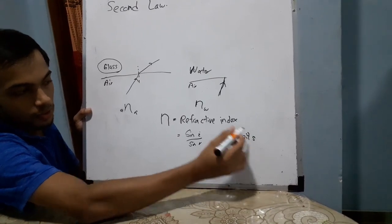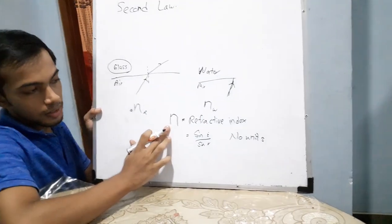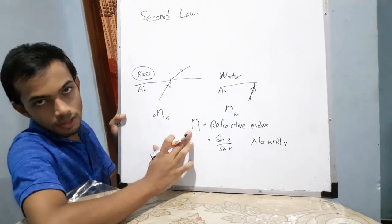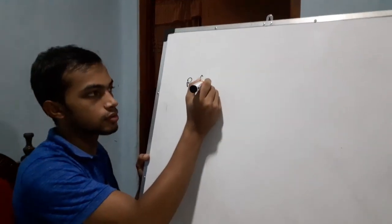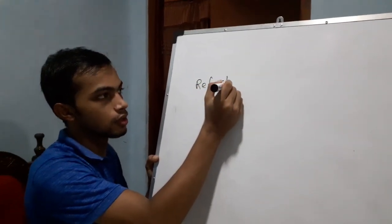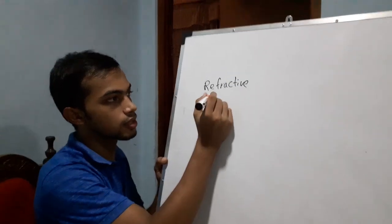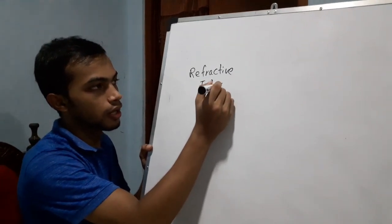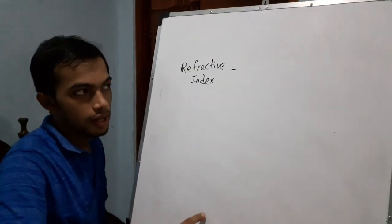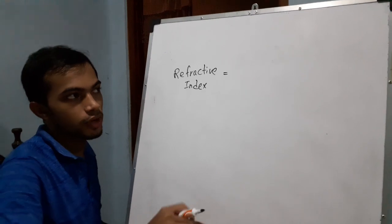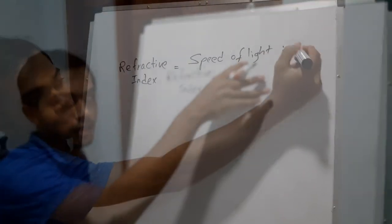The refractive index, or index of refraction, can also be expressed as the ratio of the speed of light in vacuum to the speed of light in the given medium.